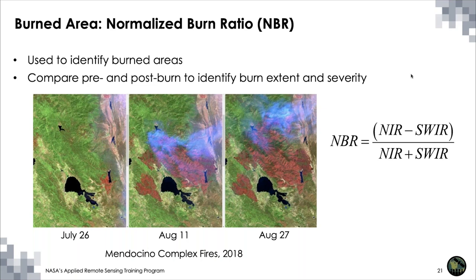We use the Normalized Burn Ratio, or NBR, to map post-fire conditions. NBR uses remote sensing data in the near-infrared and shortwave infrared to map burned areas and ultimately assess burn severity. Similar to NDVI, NBR is a unitless value ranging from negative one to one. A high NBR value closer to one indicates healthy vegetation, while a low value closer to negative one indicates recently burned areas and bare ground. Here you can see an example of NBR applied to the Mendocino Complex fire in California in 2018, with pre-, during-, and post-fire NBR images — the red area outlines where the fire occurred.